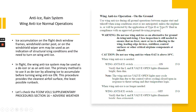Now let's talk about wind anti-ice normal operation. Ice accumulation on the flight deck window frames, windshield center post, or on the windshield wiper arm may be used as an indication of structural icing conditions and the need to turn on wind anti-ice. In flight, the wind anti-ice system may be used as a de-icer or as an anti-icer. The primary method is to use it as a de-icer by allowing ice to accumulate before turning wind anti-ice on. This procedure provides the cleanest airfoil surface and the least possible drag.